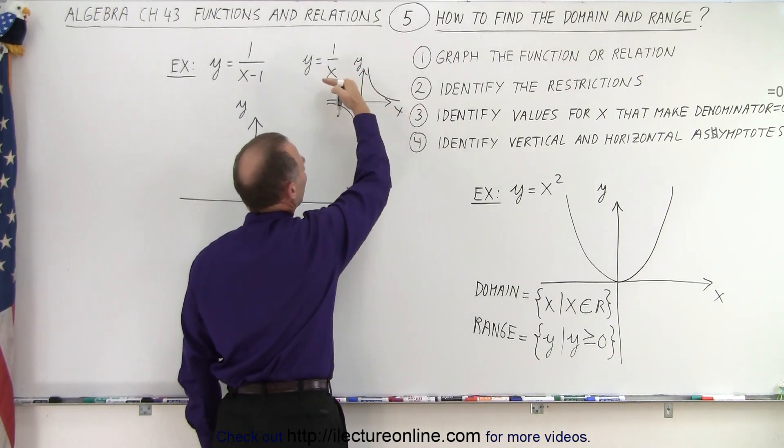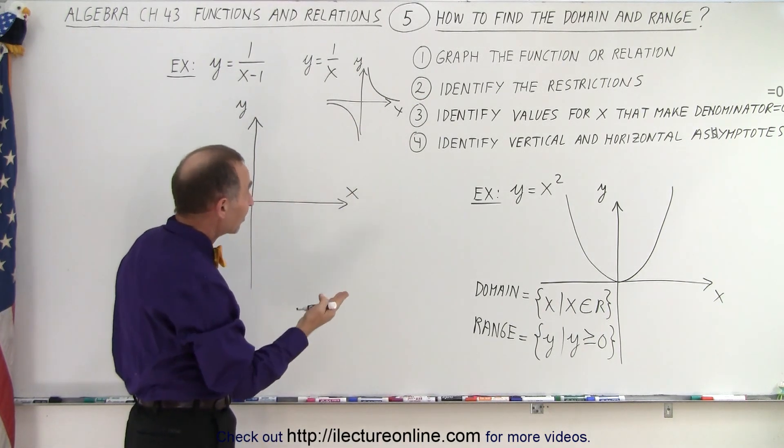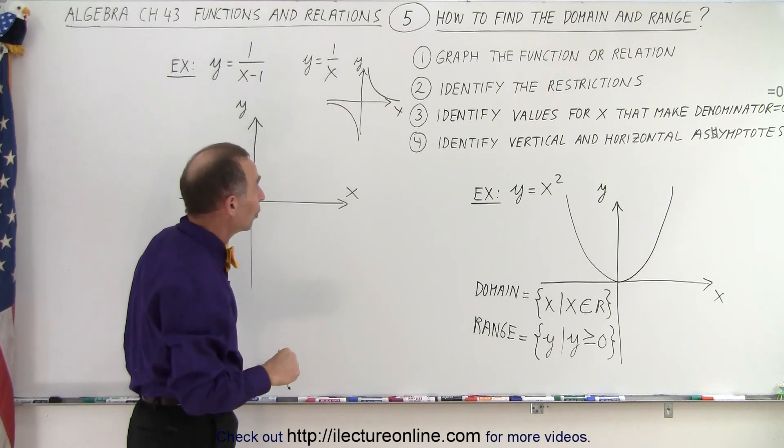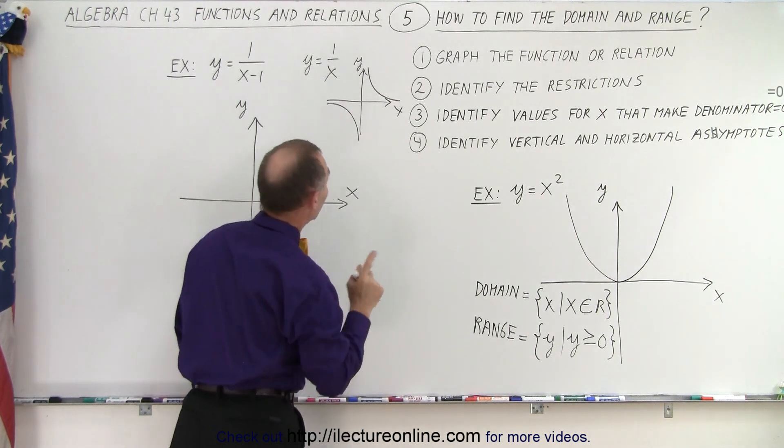And notice that it never reaches the x-axis, and it never reaches the y-axis, so there's two asymptotes. The x-axis and the y-axis are asymptotes, which means that y can never be zero, and x can never be zero.